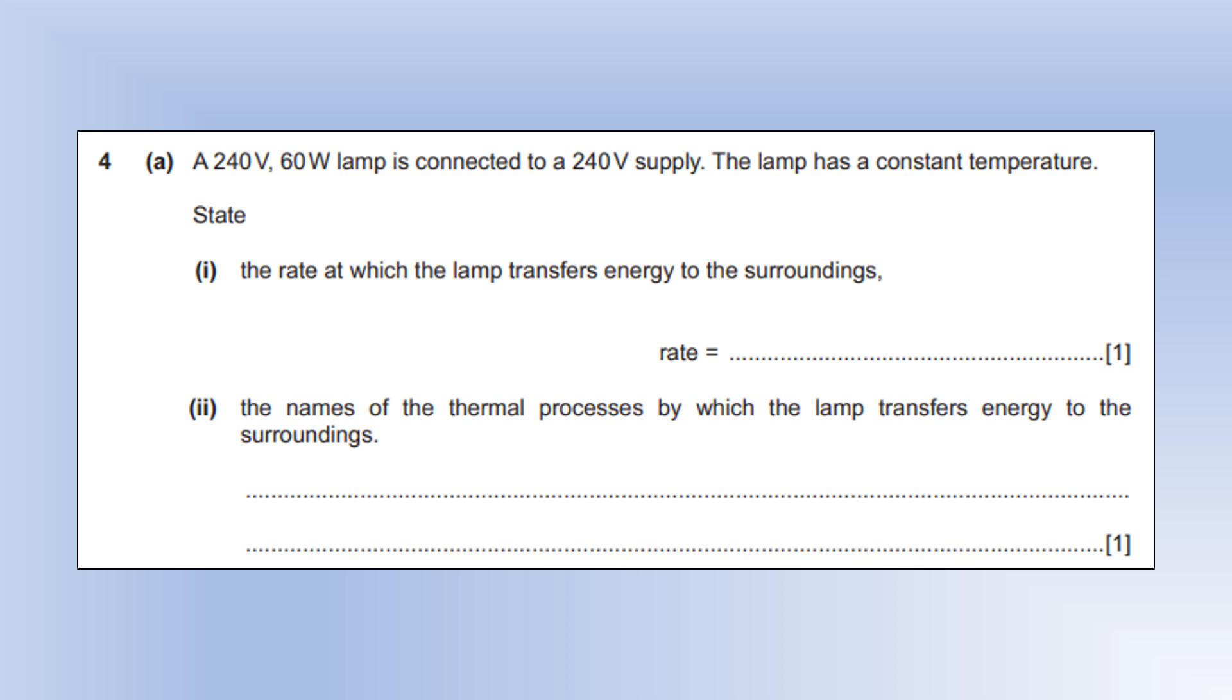A 240 volt 60 watt lamp is connected to a 240 volt supply. The lamp has a constant temperature. State the rate at which the lamp transfers energy to the surroundings. Well, if it's had a potential difference of 240, that means it's going to be 60 watts, because that's what the device says. If it was 120 volts supply, we'd get a power less than 60 watts.